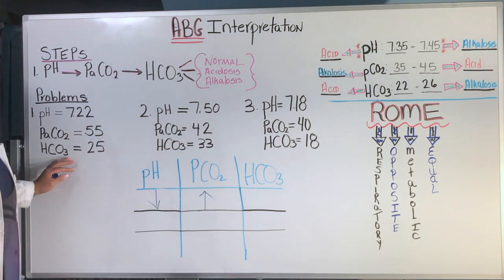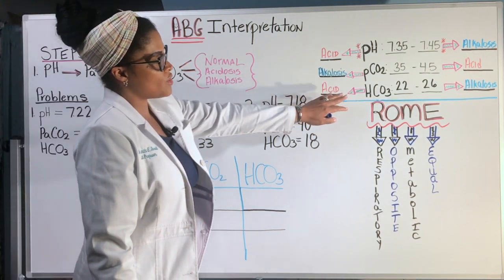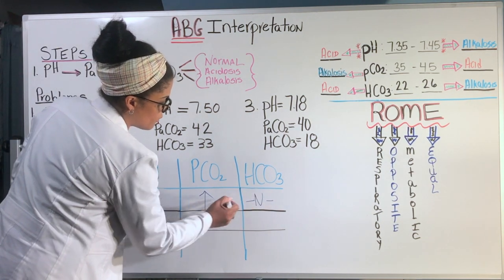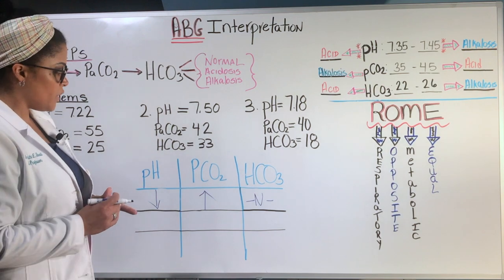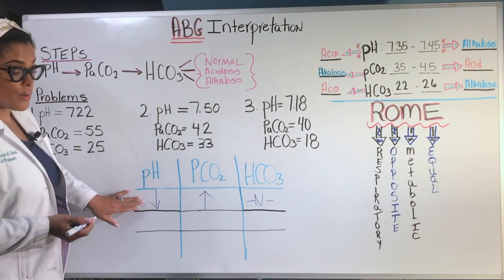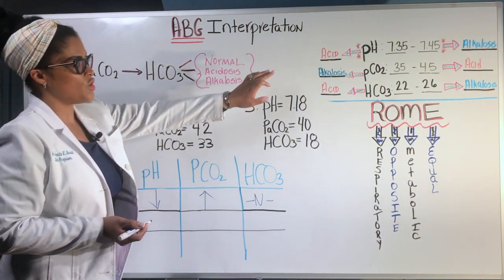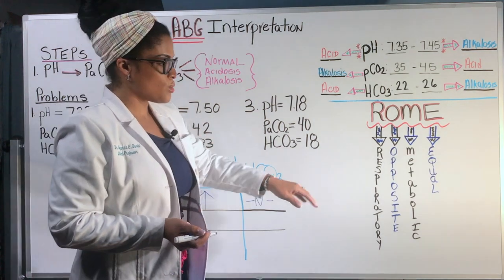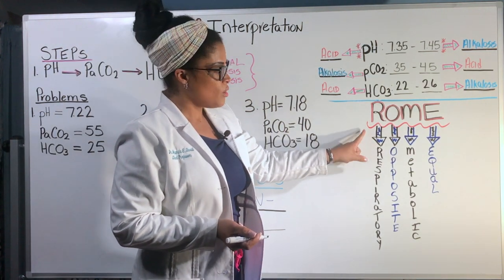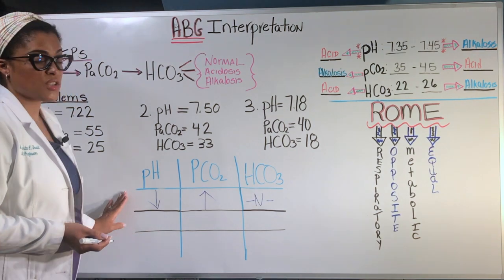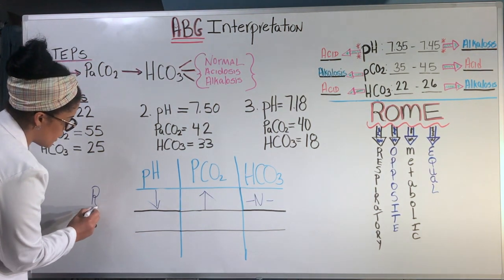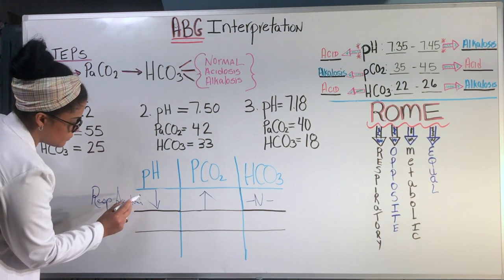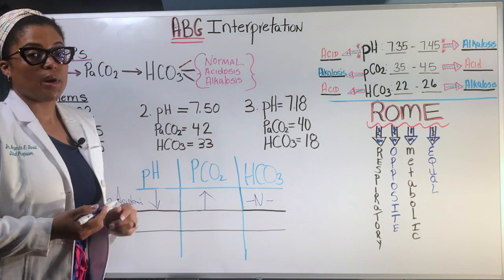And the bicarb is 25. The normal bicarb range is 22 to 26. So it is a normal state. So this, I'm going to use the letter N to symbolize normal. So here we have a pattern. The pH is low, which is an acid, and the CO2 is high, which is also an acid. So going back to our acronym of ROME, respiratory opposite, it matches the scenario. So this would be respiratory acidosis, going by that method of ROME.